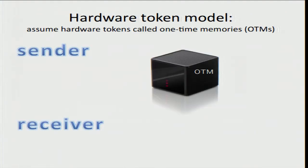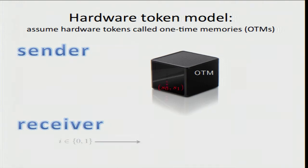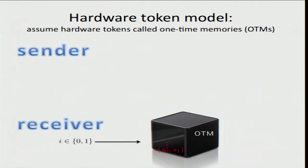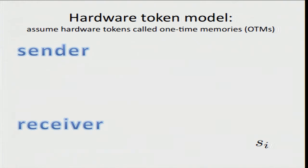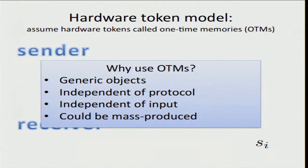One possibility in the classical setting is to use hardware tokens — some physical assumption. A simple hardware assumption we can make is that of a one-time memory, which is like a serialization of an oblivious transfer. Here the sender has two inputs, S0 and S1, which she inputs into this one-time memory. She sends the one-time memory to the receiver, who inputs his own choice i and receives the output Si. Subsequently, the one-time memory dissolves or is rendered unusable, and the receiver can't obtain the other output.